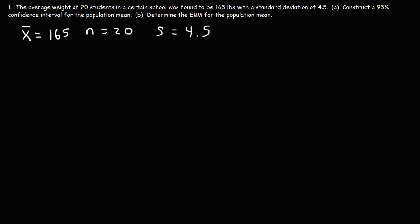There's something else to consider as well: the sample size. When n is equal to or greater than 30, that's a good indication to use the normal distribution. But in this example, n is less than 30, so we use the student's t distribution. Those are two good indicators: having the sample standard deviation and n less than 30.